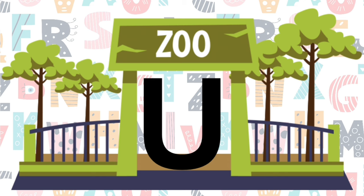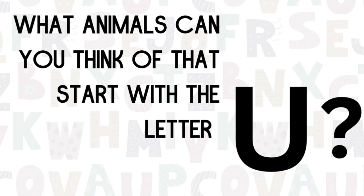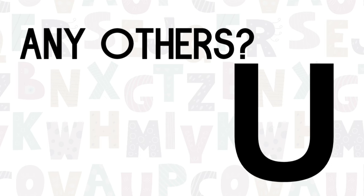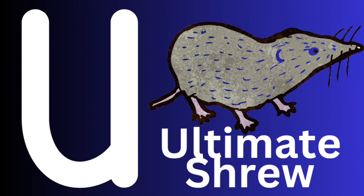Can you think of any animals at the zoo that start with the letter U? The U says its name U and also U. What about the unique umbrella bird? Can you think of any other animals that start with the letter U? This one was really hard too. What about the ultimate shrew?